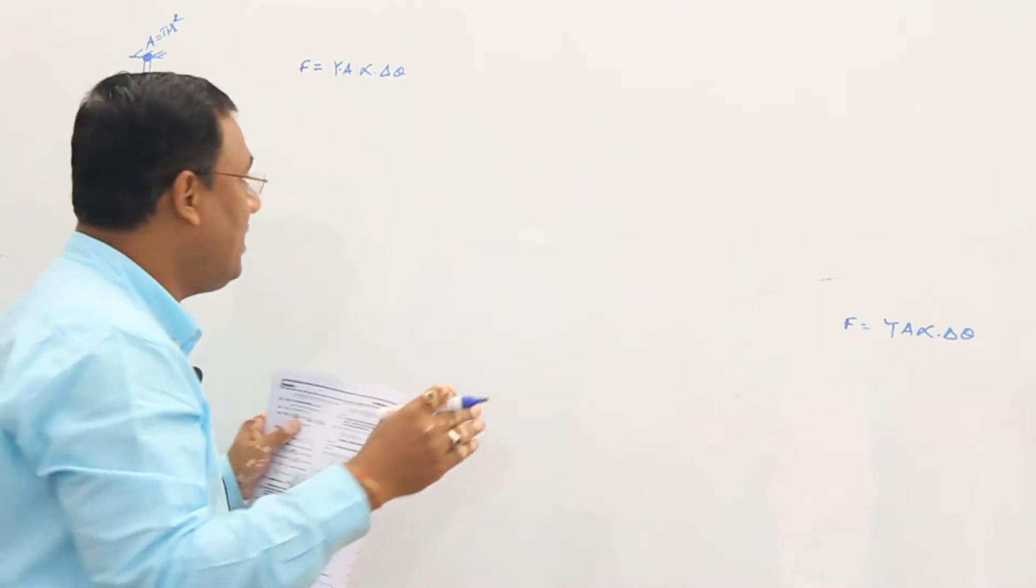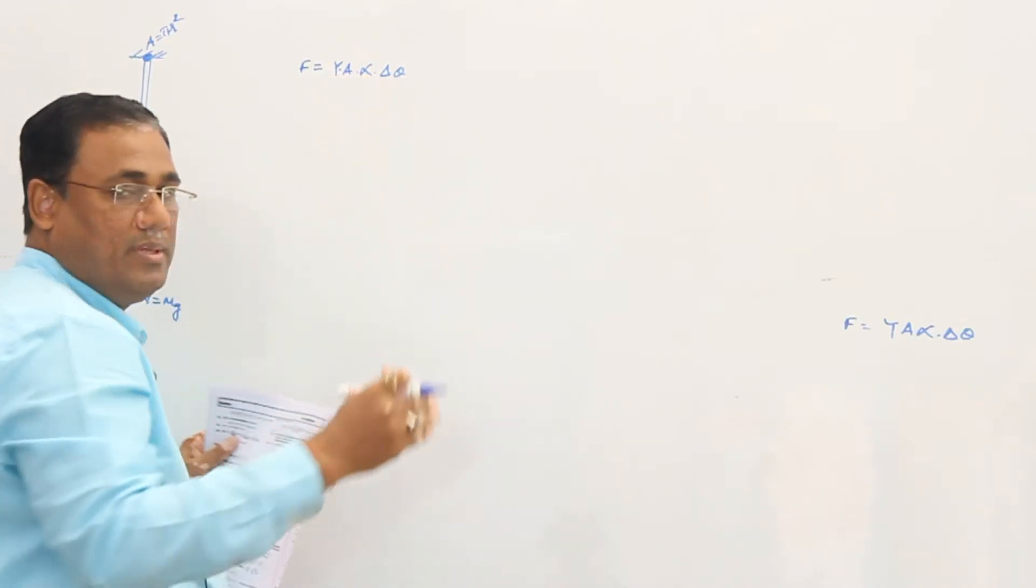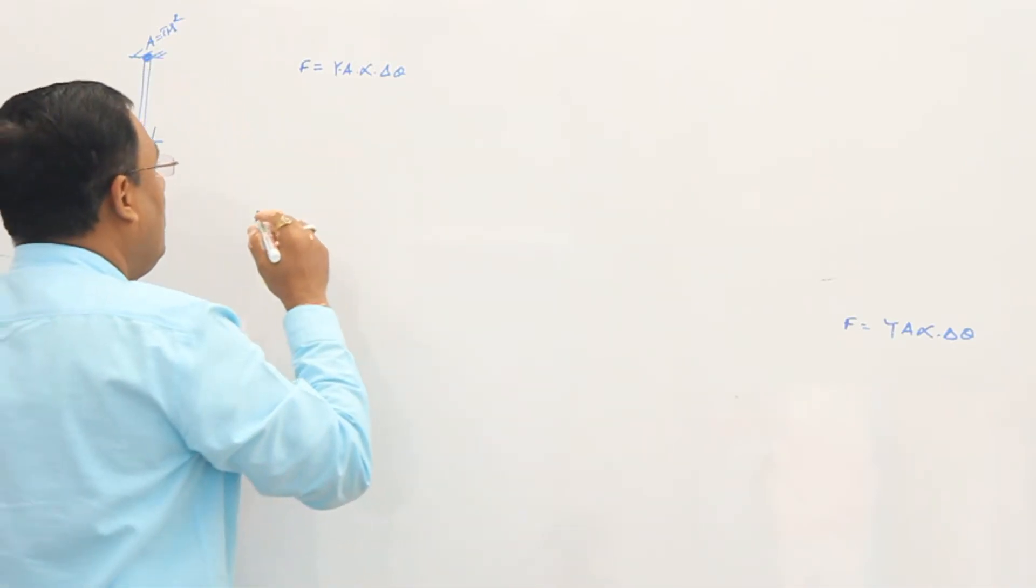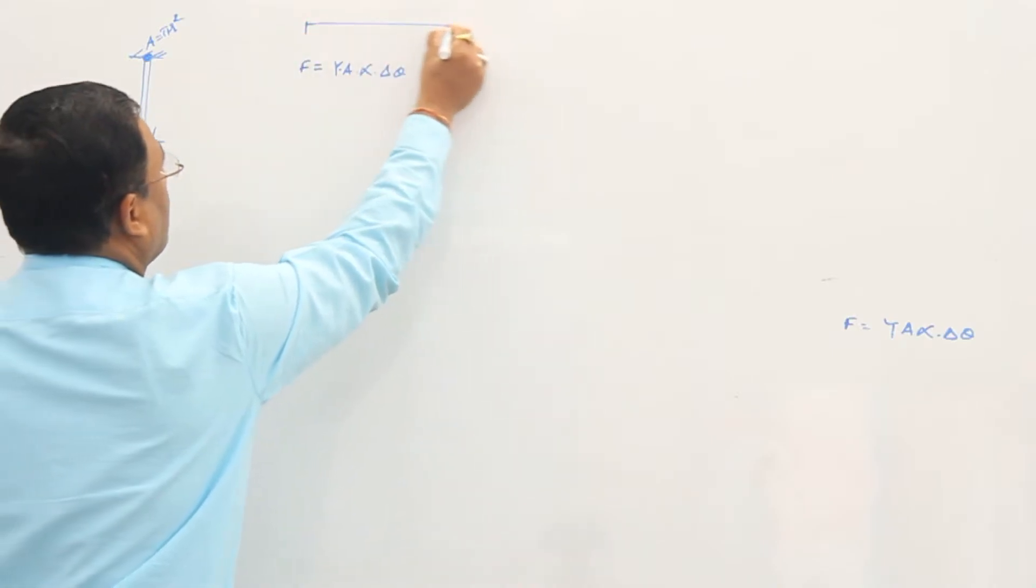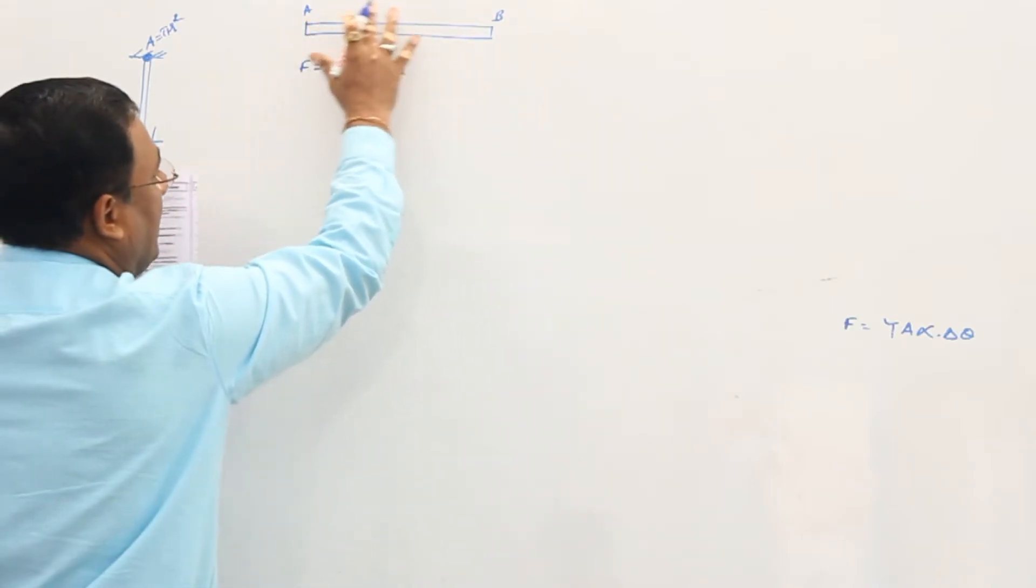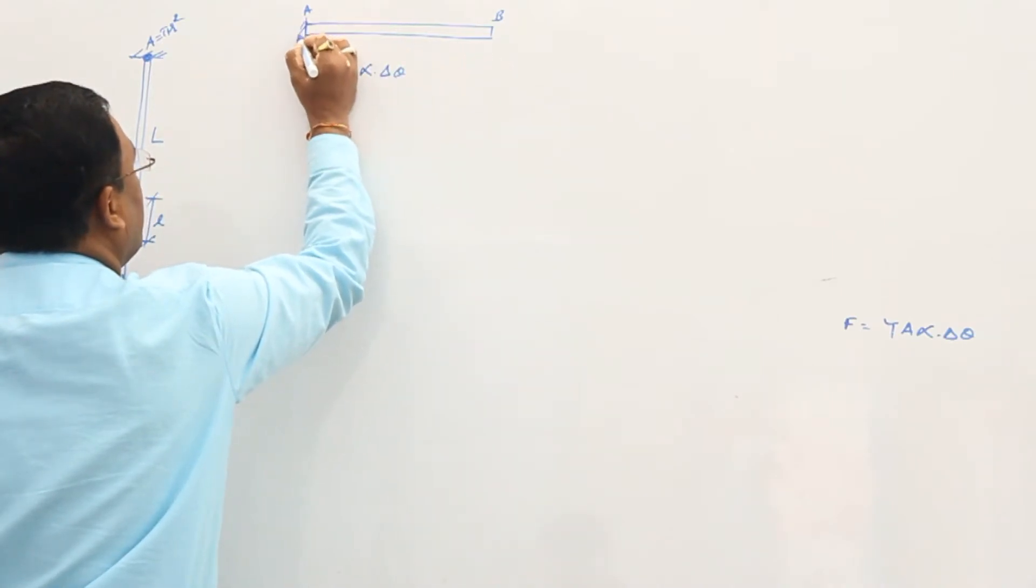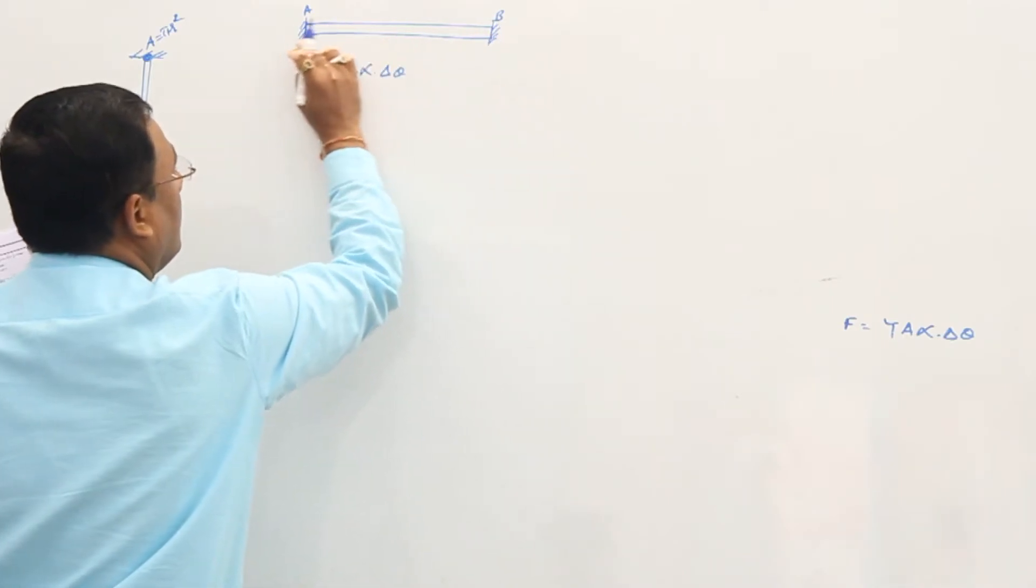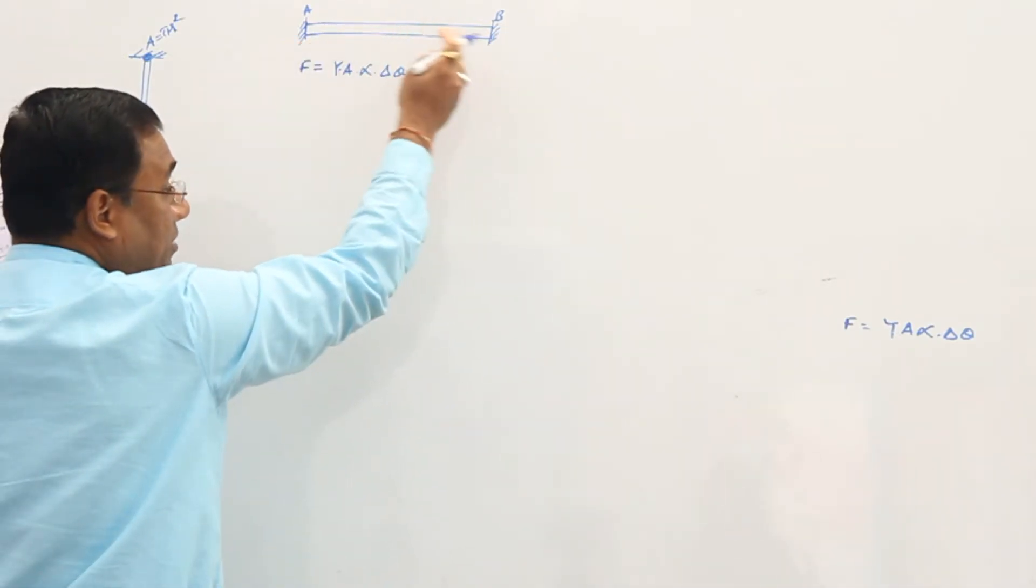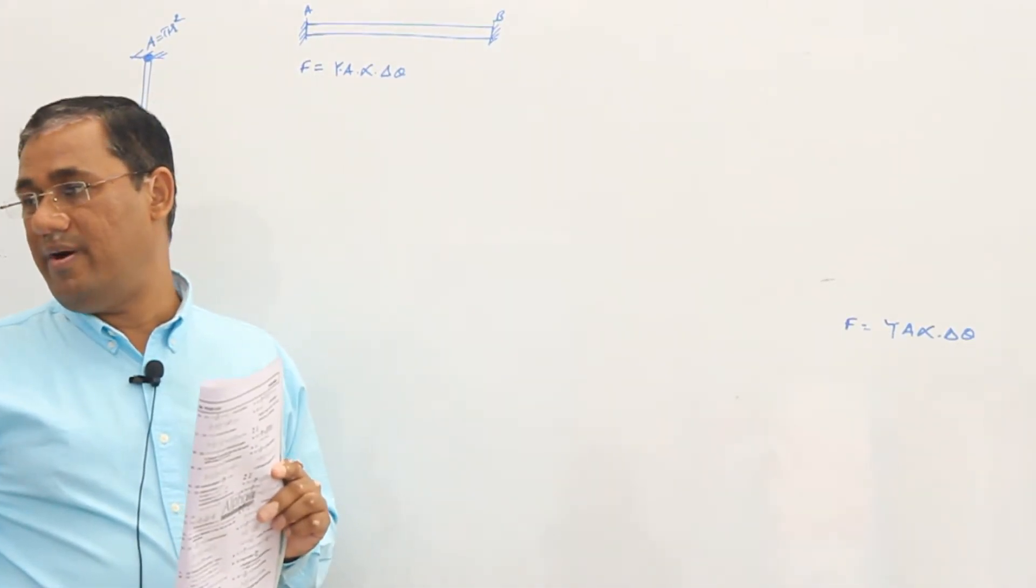Now, if we heat this rod, its length will increase. But its length is not being allowed to increase - meaning suppose we fix it from both ends. When we heat it, temperature increases, so length will increase. But length is not being allowed to increase, so a force will develop inside it. That force is given by this formula: F equal to Y·A·α·ΔT.